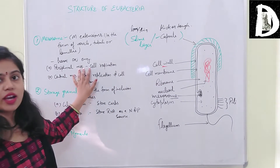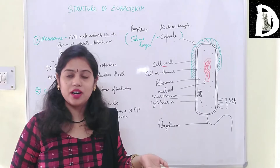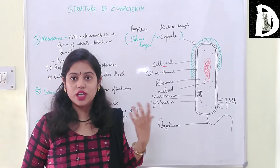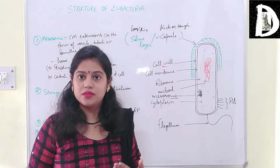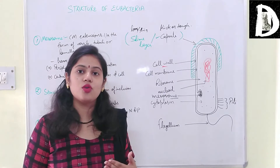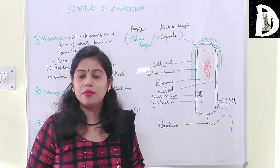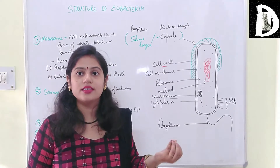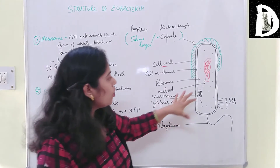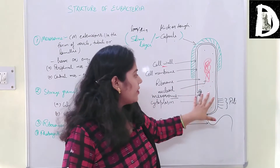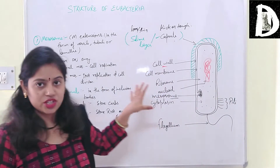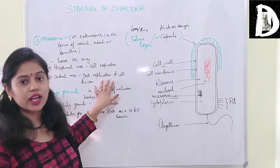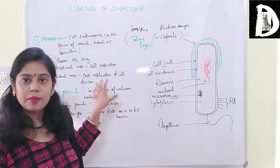Peripheral mesosomes function in cell respiration - they have powerful oxidative enzymes, making them functionally mitochondria-like structures. They carry out oxidation, respiratory reactions, and ATP synthesis. The main function of peripheral mesosomes is cell respiration, while the main function of central mesosomes is attachment to the nucleoid, helping in DNA replication and cell division.